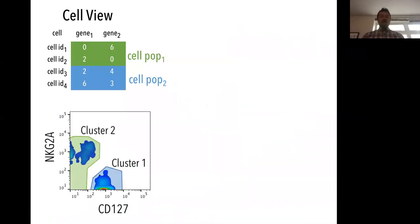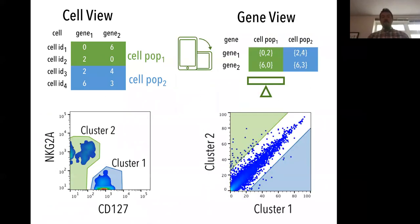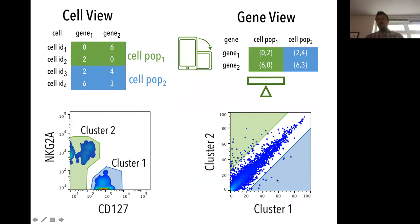Here's an illustration of how gene view works. We have a data matrix with different populations defined by geometric gates for two different parameters. If we transpose that data matrix, different genes essentially behave as the cells from the previous matrix, and populations behave as the parameters. Genes overexpressed in cluster two will be found in one region, and genes overexpressed in cluster one will be found in another region of the gene view graph window.